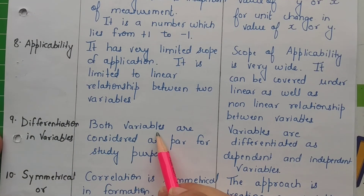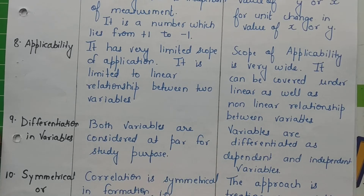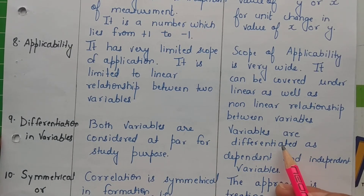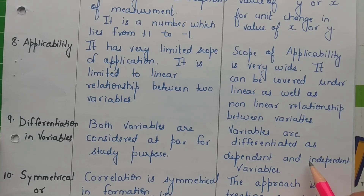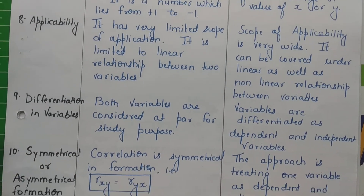Differentiation in variables: In correlation, both variables are considered at par for study purposes. The two variables you study and analyze are treated equally — neither is given a special role. But in regression, the variables are not treated at par. One variable is identified as dependent and the other as independent, so they are treated differently in the analysis.